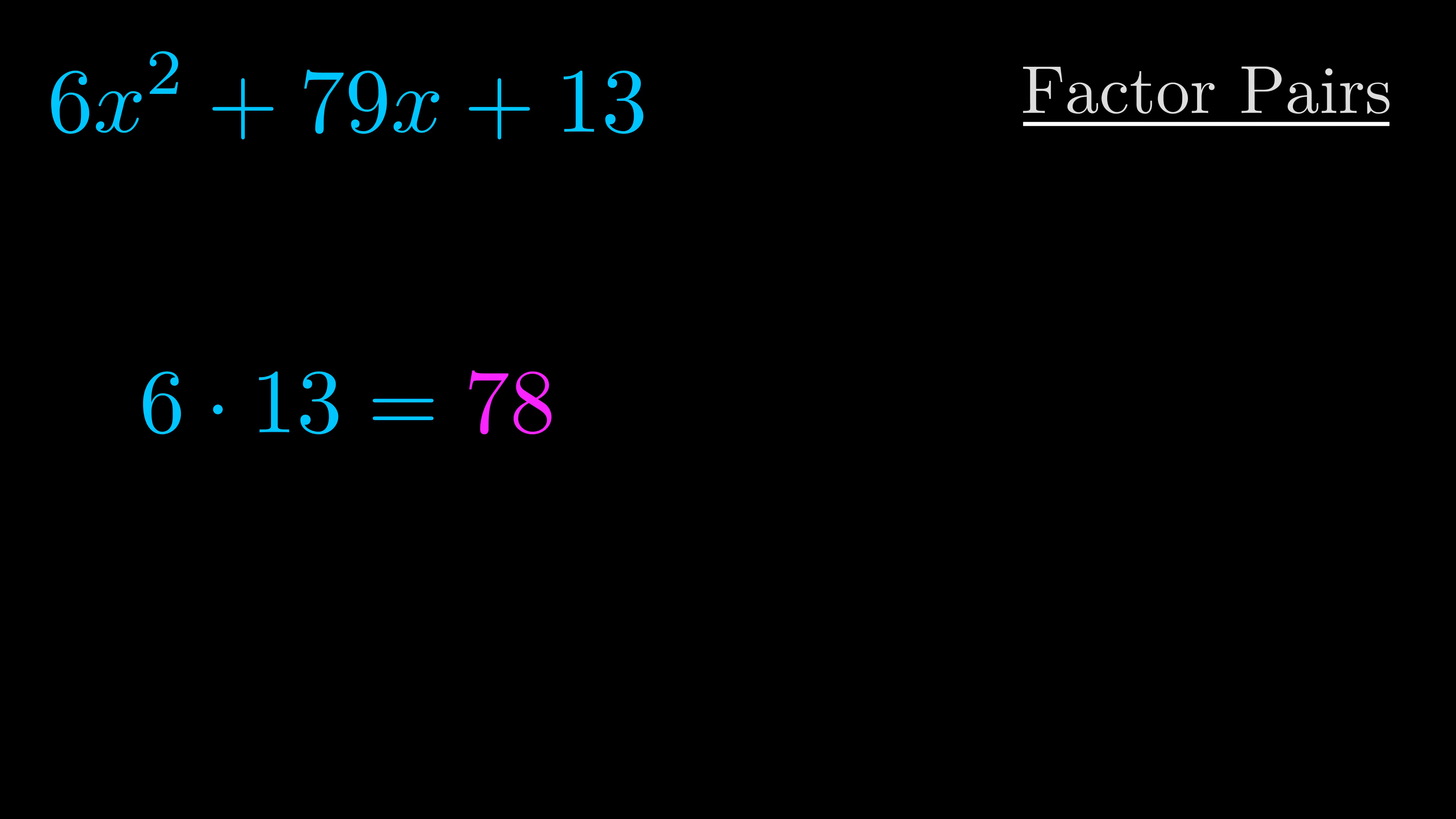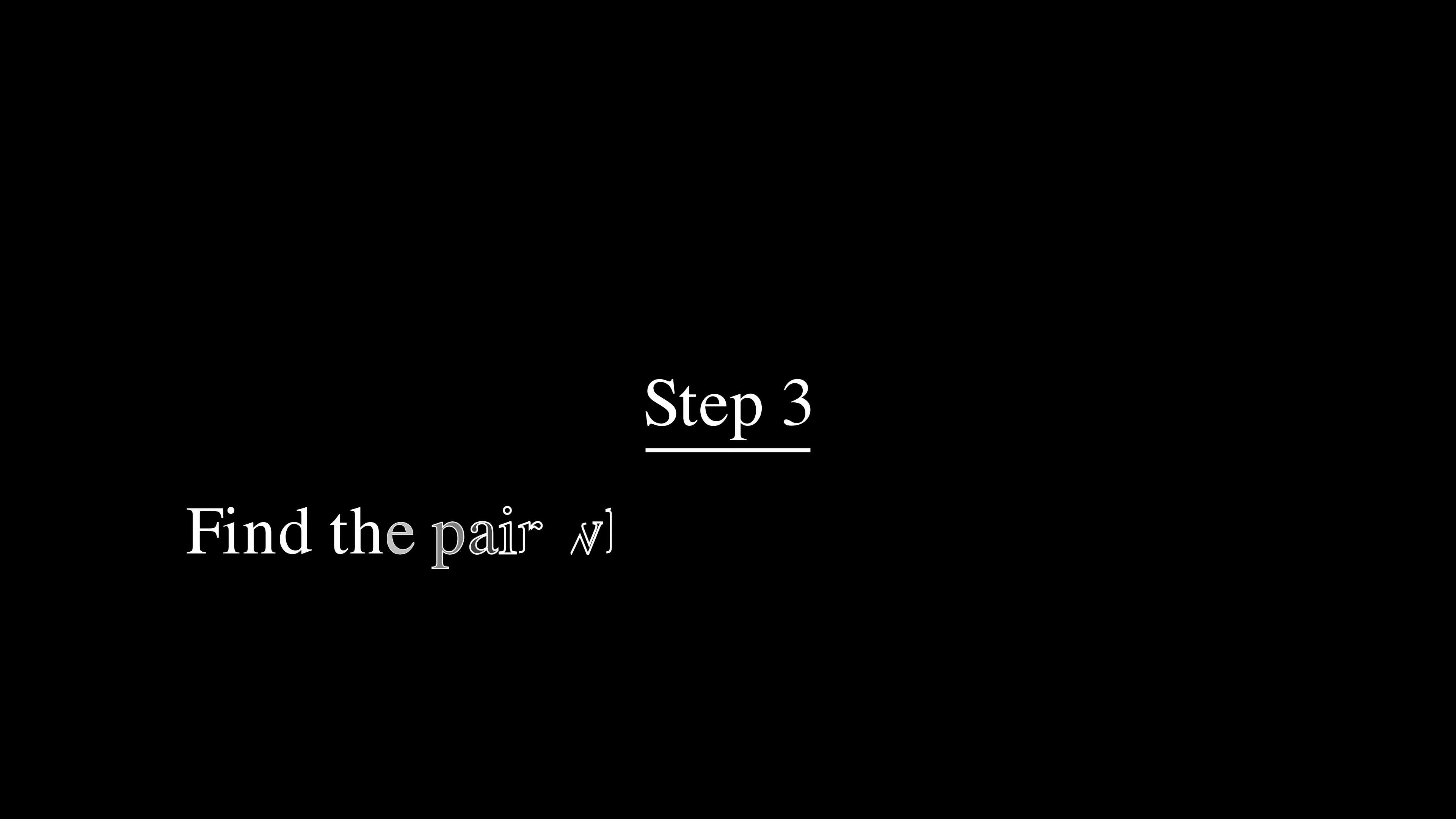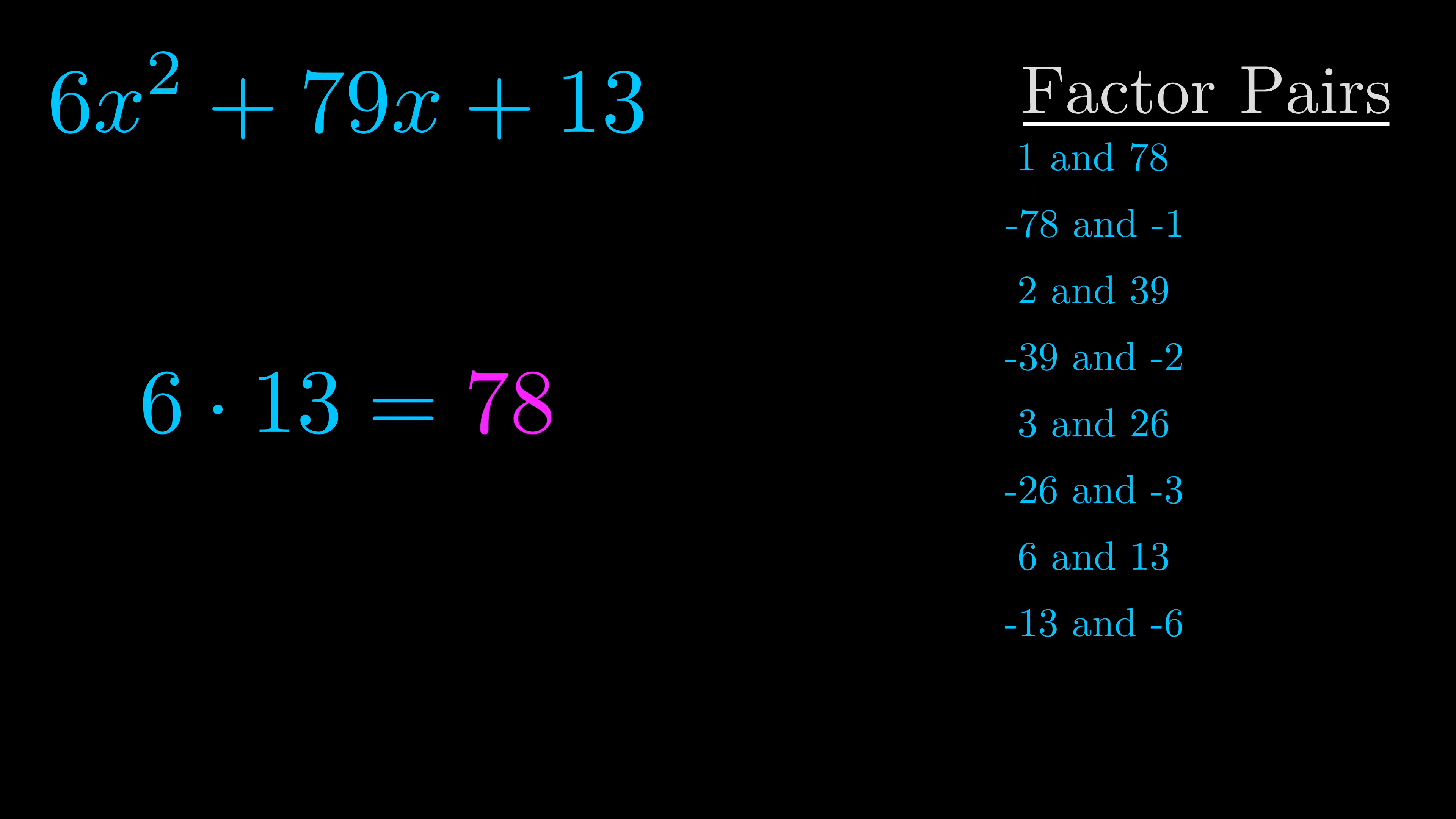Okay, here's what I came up with. Once you have these factor pairs, the goal is to find which of these pairs adds to the b value. The b value is the coefficient on the x term—that's the middle term, the one that we haven't done anything with yet. And really, this is the only factor pair that we need.